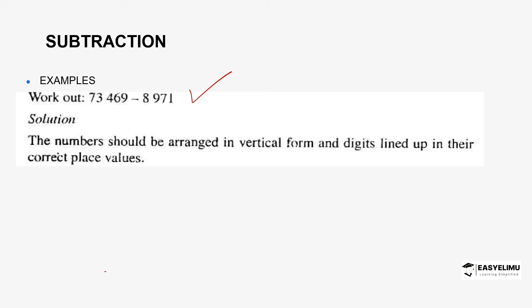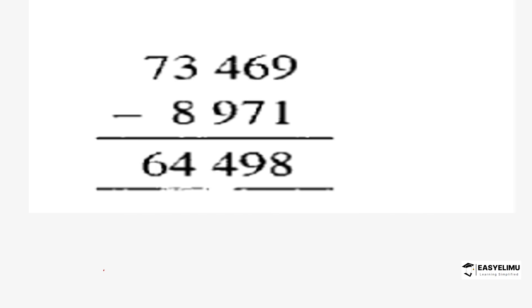The first example: evaluate 73,469 minus 8,971. The solution is to first rearrange — since the numbers are organized horizontally, you arrange them vertically with digits lined up in their correct place values. Digits in the same place value are placed in one vertical line. Here, 9 is in the same 1's place value as 1; 6 and 7 in the 10's; 4 and 9 in the 100's; 3 and 8 in the 1000's; and 7 in the 10,000's with nothing below — you can fill the gap using zero.